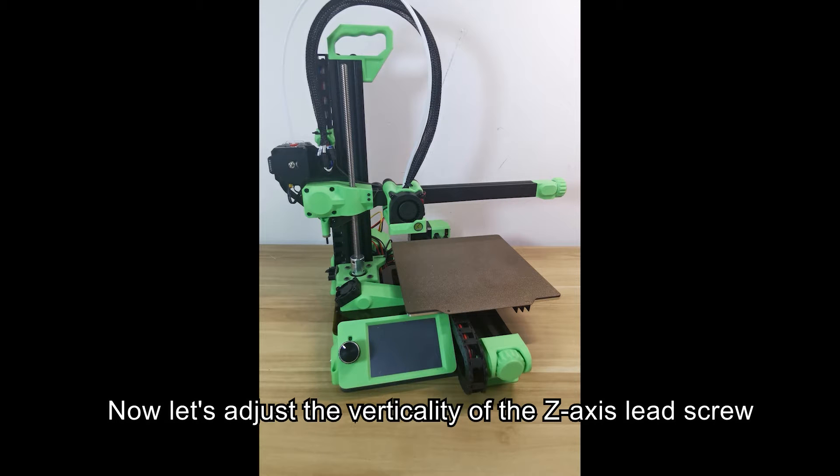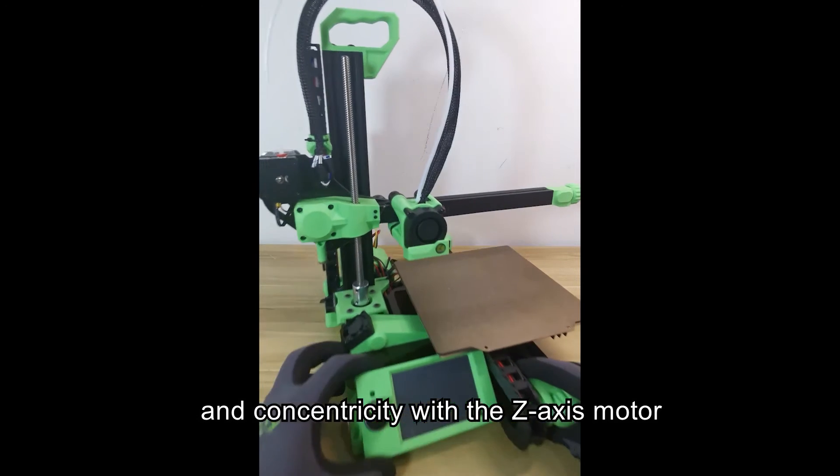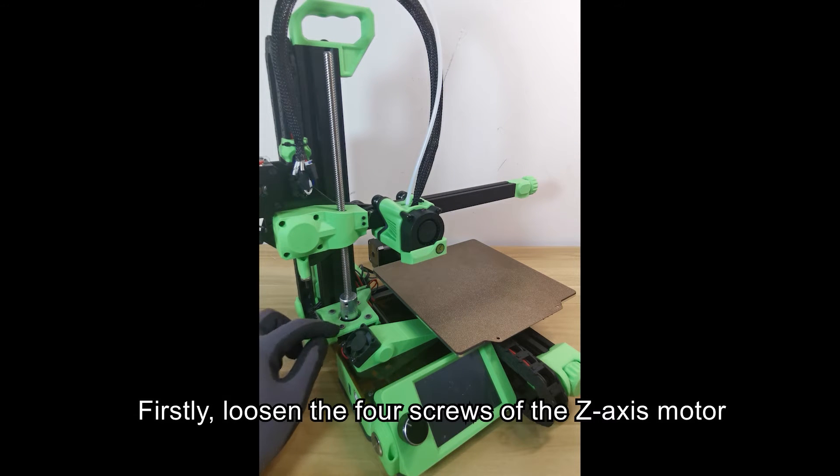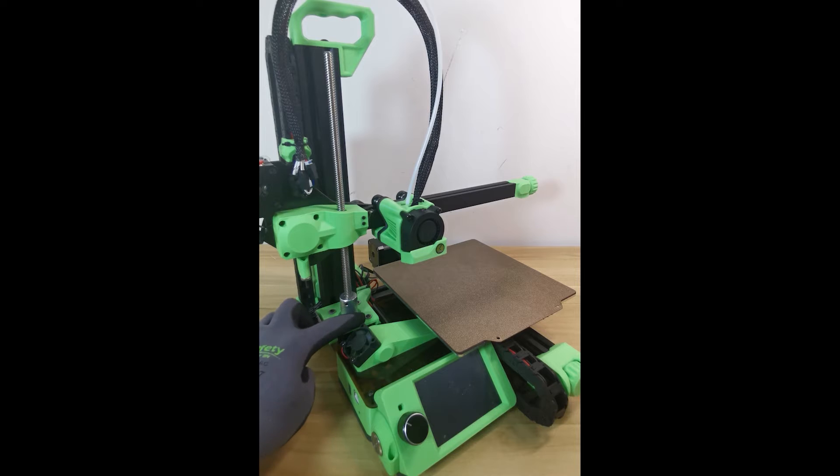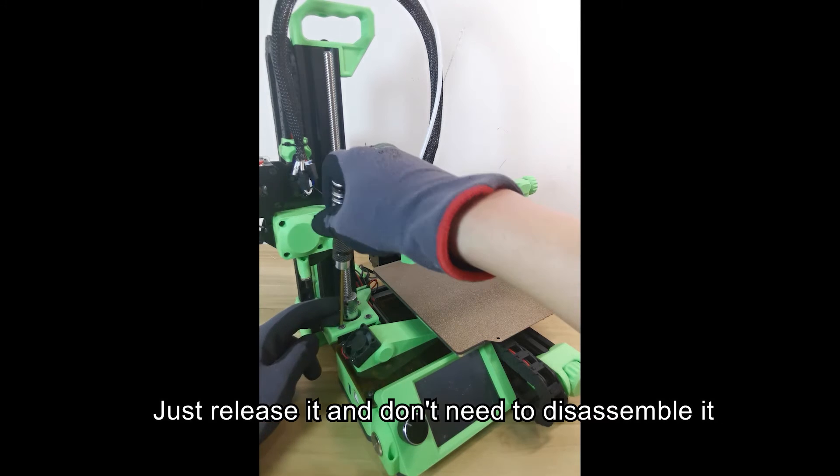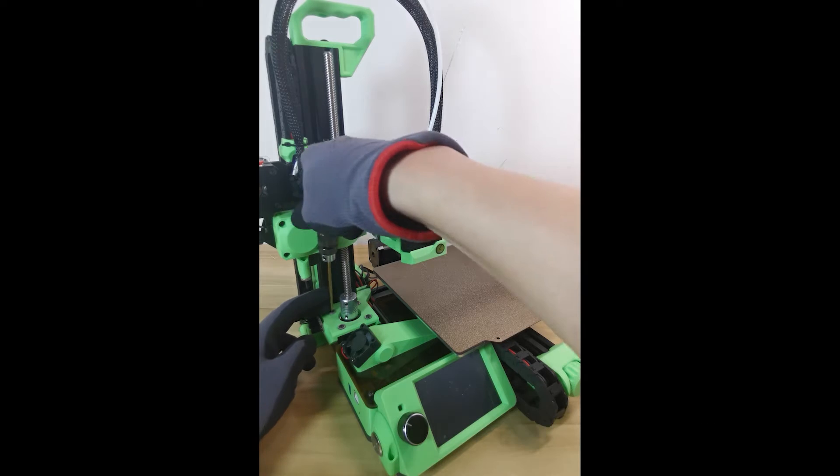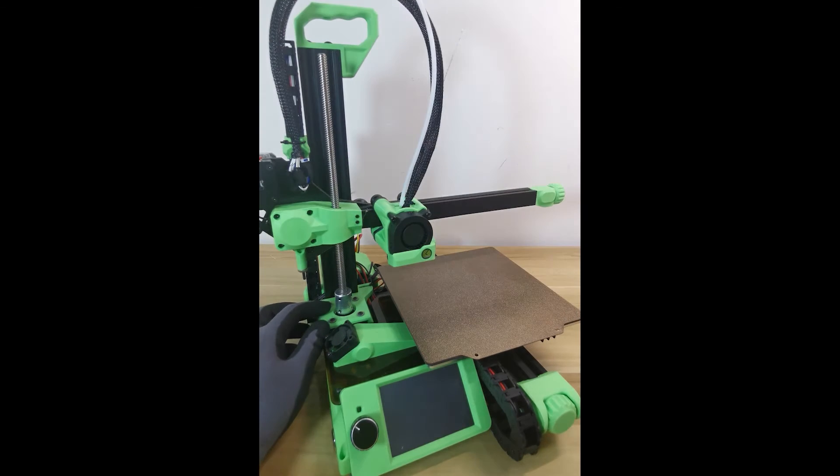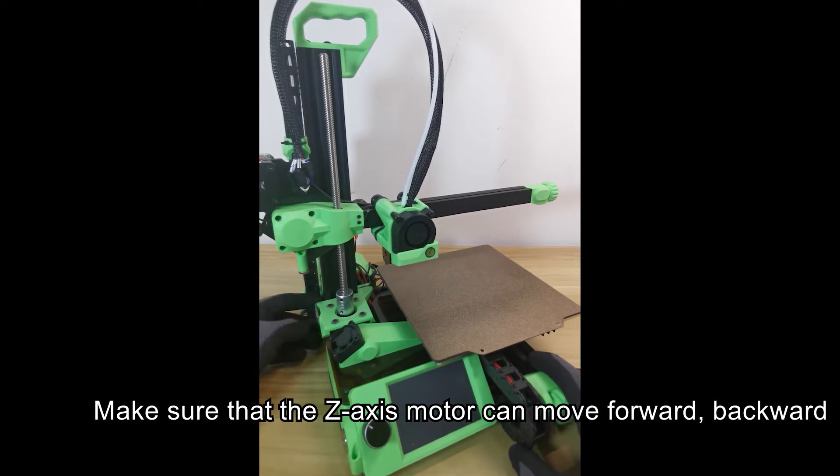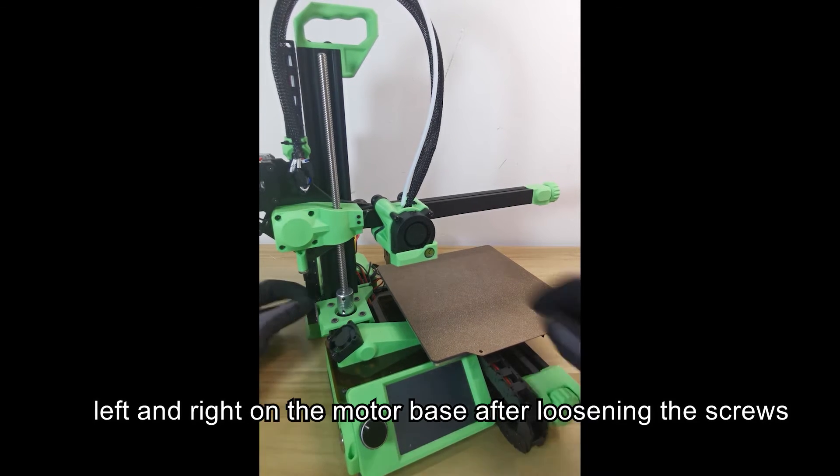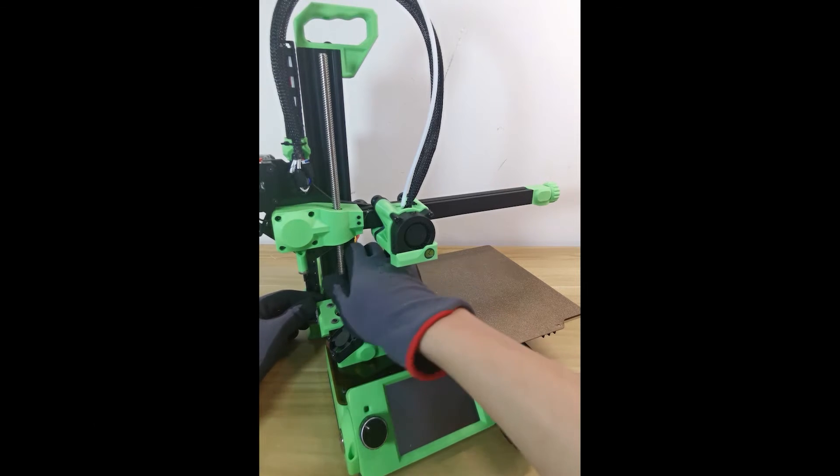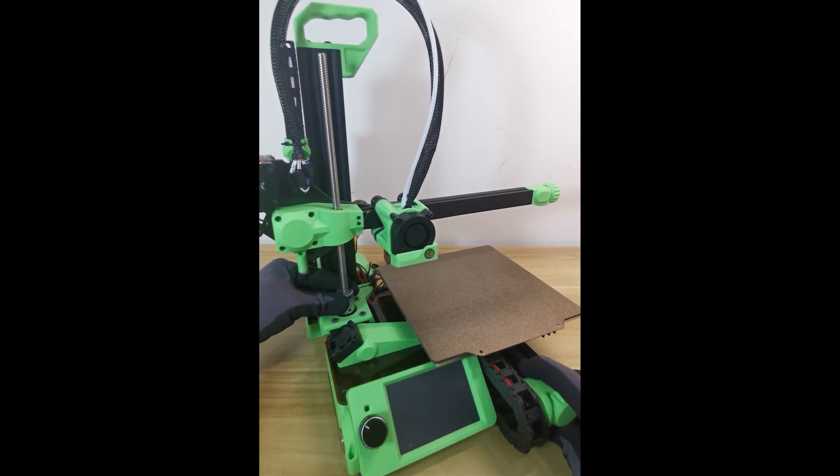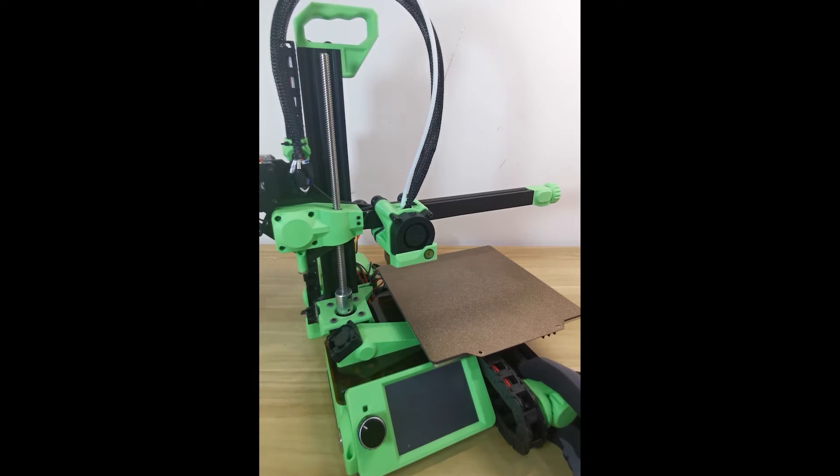Now let's adjust the verticality of the Z-axis lead screw and the concentricity with the Z-axis motor. Firstly, loosen the four screws of the Z-axis motor - just release them, don't disassemble. Make sure that the Z-axis motor can move forward, backward, left and right on the motor base after loosening the screws.